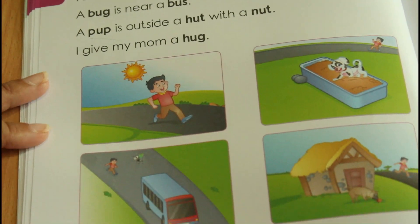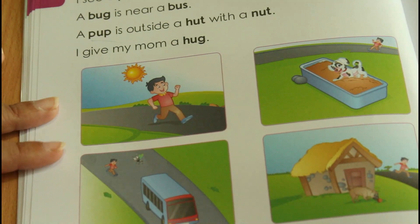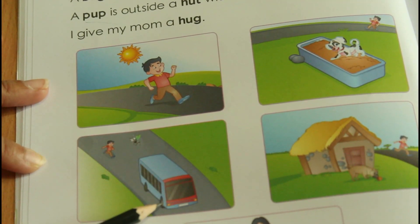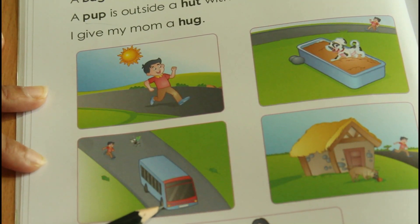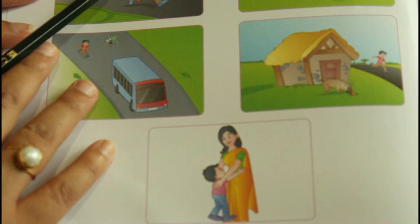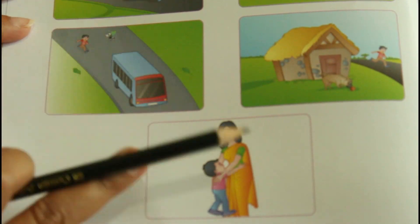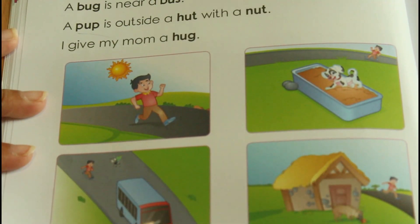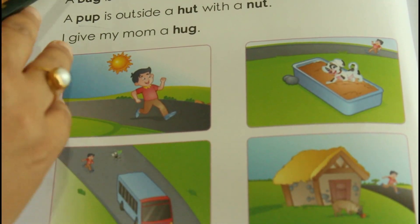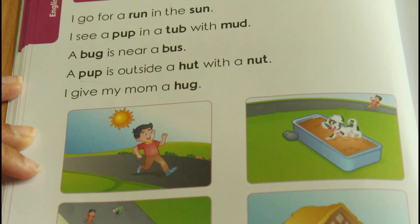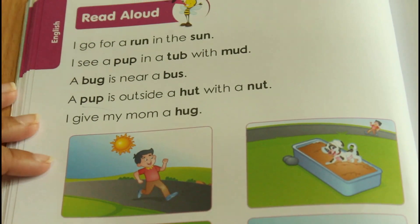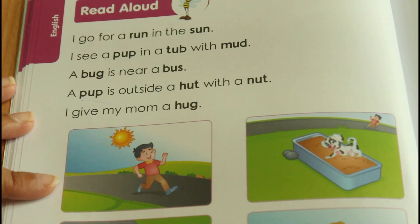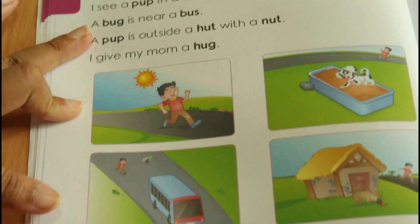See: 'I go for a run in the sun.' 'I see a pup in a tub with mud.' 'A bug is near a bus.' 'A pup is outside a hut with a nut.' 'I give my mum a hug.' Look at the pictures and try to match the lines to the correct picture.